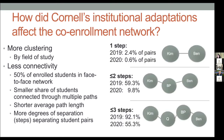Students connected in that network tend to be connected through fewer different paths. Instead of multiple ways to get from student A to student B, there might only be one way. The path between students actually lengthened by about a full step — from 2.5 steps to almost 3.5. In 2019, 2.4% of all student pairs were connected by one step; by 2020, that dropped to 0.6%. At two-step separation, it dropped from 59% to only about 10% of pairs. At three steps, from 92% down to 55%.